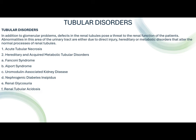Now let's go to the second type of renal disease, tubular disorders. Tubular disorders are defects in the renal tubule that pose a threat to renal function. Abnormalities are due to direct injury, hereditary factors, or metabolic disorders altering normal renal tubule processes. There are two main types: acute tubular necrosis (ATN), and hereditary and acquired metabolic tubular disorders including Fanconi syndrome, Alport syndrome, uromodulin-associated kidney disease, nephrogenic diabetes insipidus, glycosuria, and renal tubular acidosis.